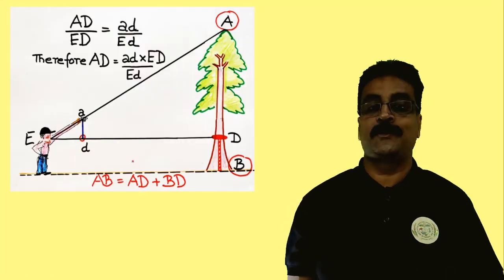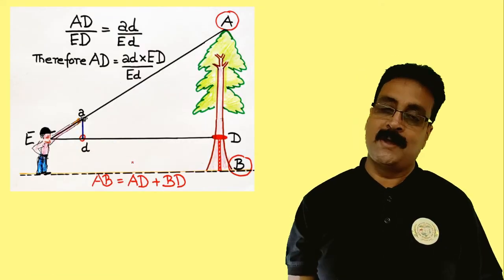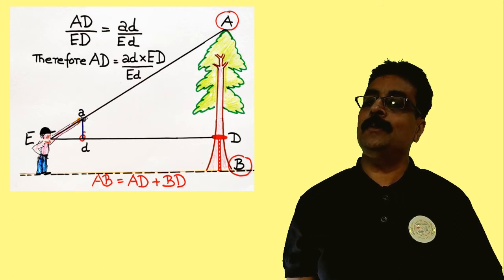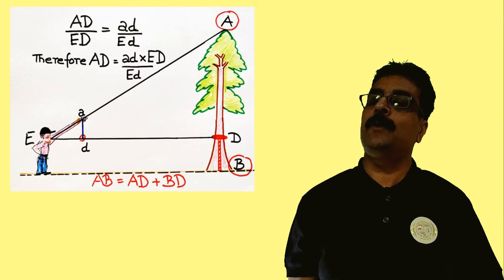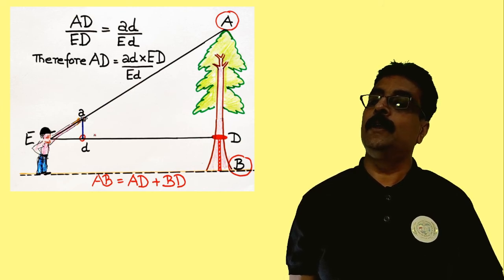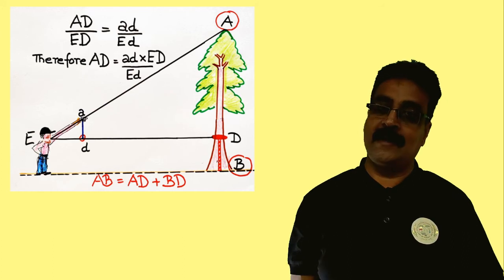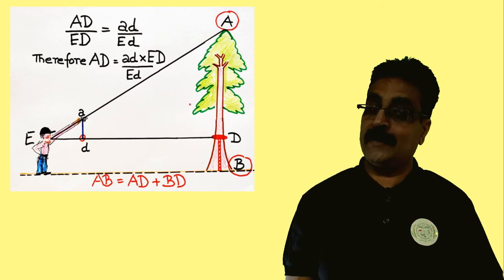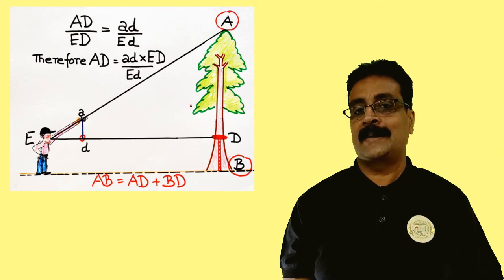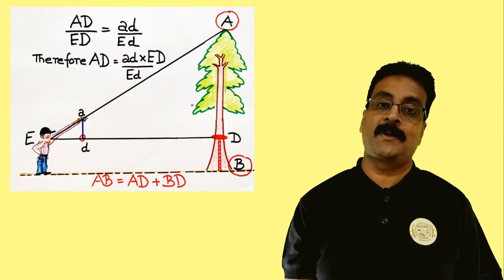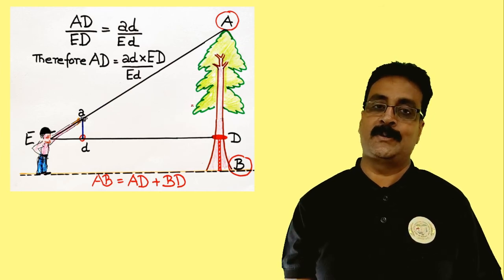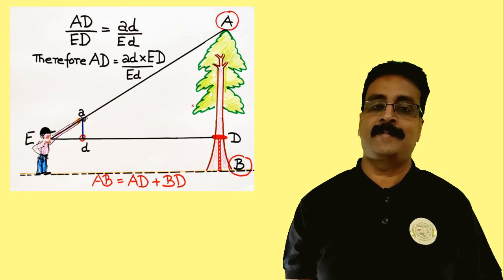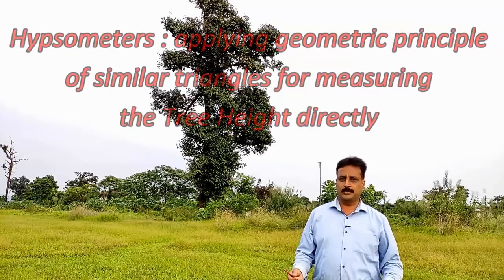Coming to the geometric principles and the instruments based on them: the observer stands holding a ribbon or string tied with some weight, like a pendulum, trying to cover the distance A to D with it. The eye height — BD — will be added later to AD. Going into the field helps understand how some instruments are based on the geometric principle of similar triangles, by adding the eye height. Let's see the demonstration.